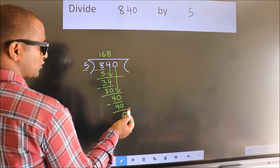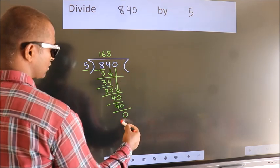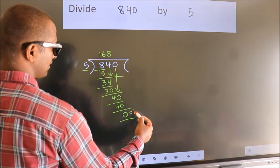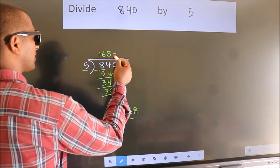No more numbers to bring it down. So we stop here. This is our remainder. This is our quotient.